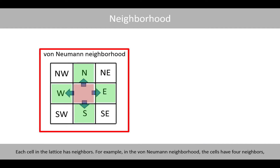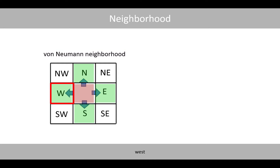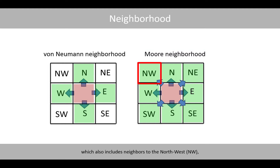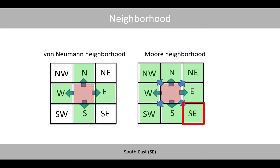Each cell in the lattice has neighbors. For example, in the von Neumann neighborhood, the cells have four neighbors: one to the north, west, south and east. In the so-called Moore neighborhood, the cells have instead eight neighbors, which also includes neighbors to the north-west, south-west, south-east and north-east.